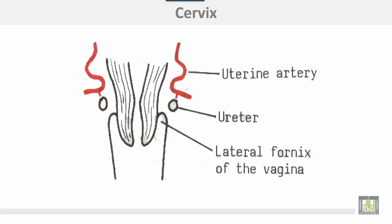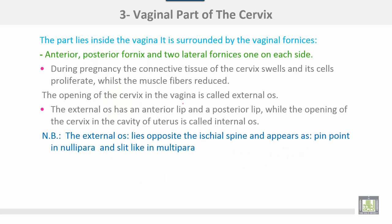The diagram shows the uterine artery, tortuous, crossing over the ureter near the cervix. The vaginal part of the cervix lies inside the vagina and is surrounded by vaginal fornices — anterior, posterior, and two lateral fornices, one on each side. During pregnancy the connective tissue of the cervix swells and its cells proliferate while muscle fibers are reduced. The opening of the cervix into the vagina is called the external os, which has an anterior lip and a posterior lip, while the opening of the cervix into the uterine cavity is called the internal os.